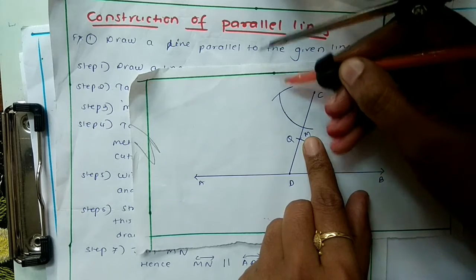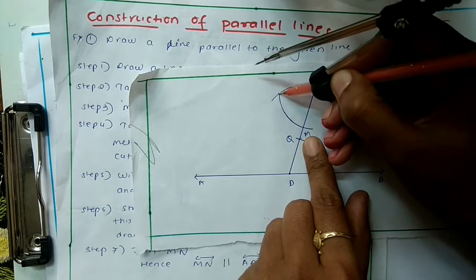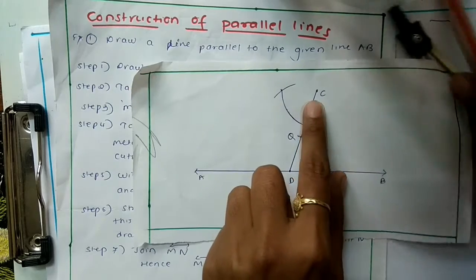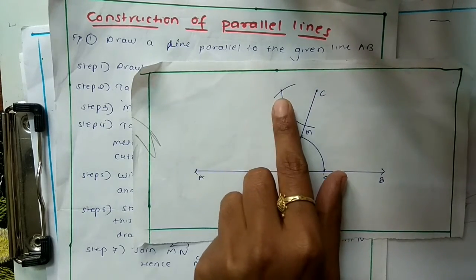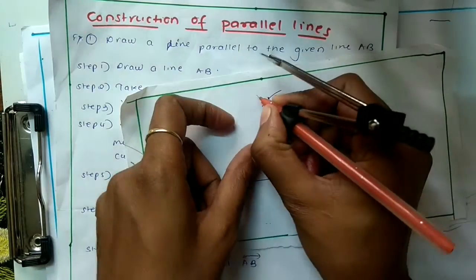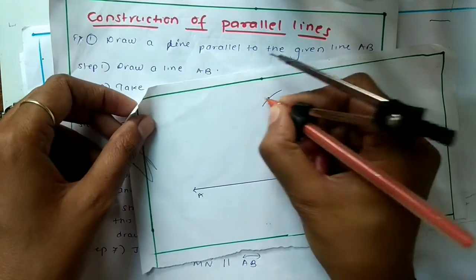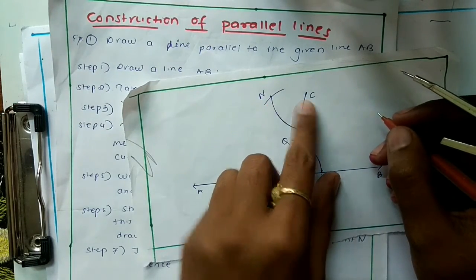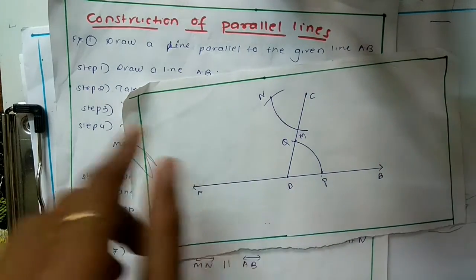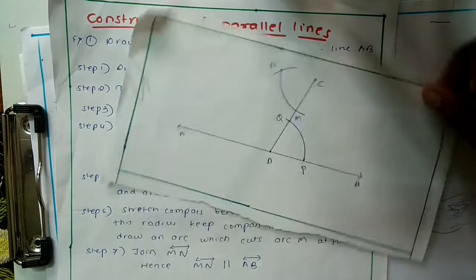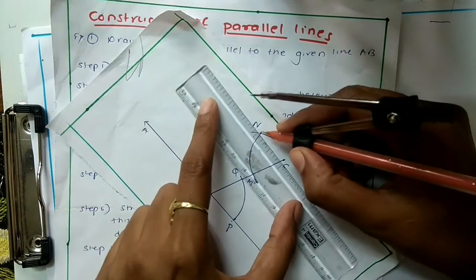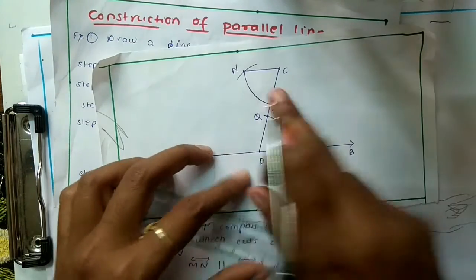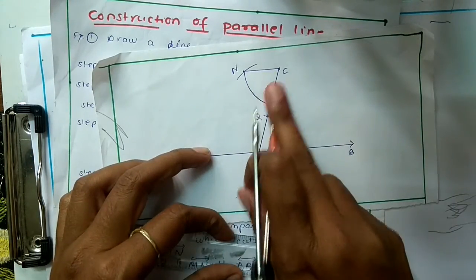Here we got the common intersection point — you can extend the arc if needed. The first point is C and the second point, which we can name E or N, is this intersection. If you join these two points you will get a line that is parallel to AB.